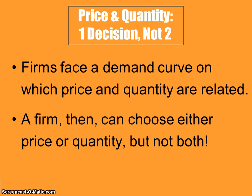Firms face a demand curve on which price and quantity are related. A firm can choose either the price they're going to sell their product at, or the quantity of sales — but they can't choose both because the demand curve cannot be ignored. For example, if I decided I wanted to sell five units of output, I'd need to reference the demand curve to figure out what I could charge. You can choose price or quantity, but not both.